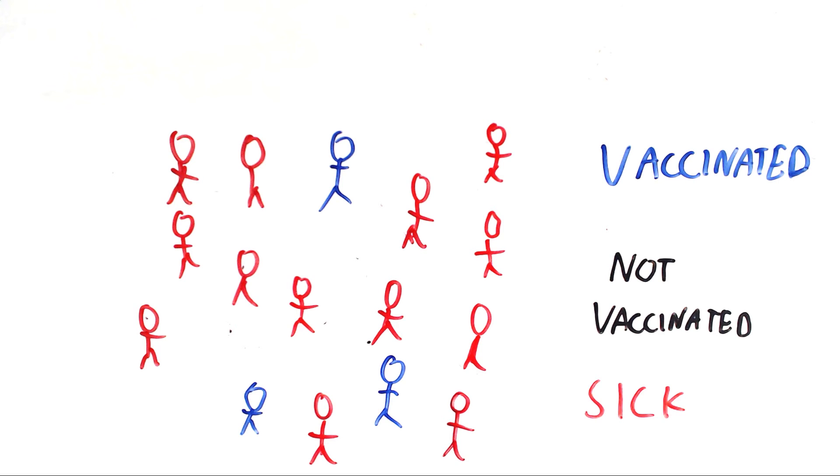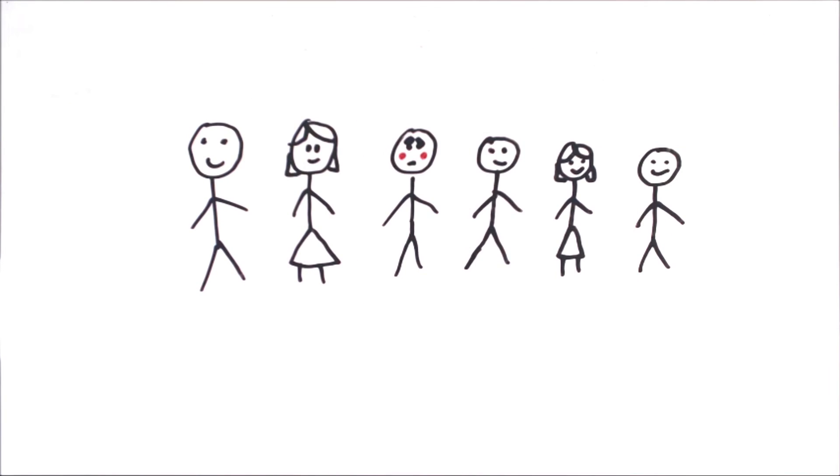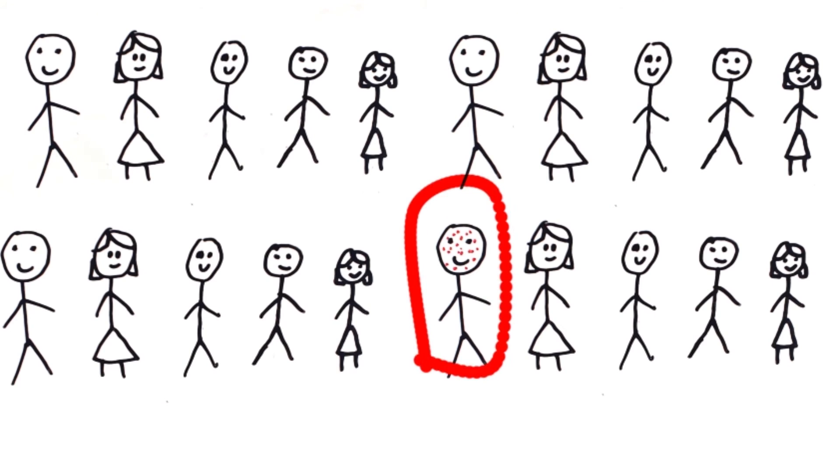Vaccines are not without risk. Nothing is. But some of the most common side effects of vaccines, such as a fever, occur in about 1 in 6 people, and less than 1 in 20 would develop a rash. And for serious allergic reactions, these occur in less than 1 in 1 million people.